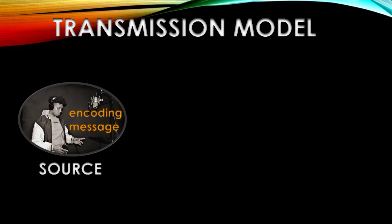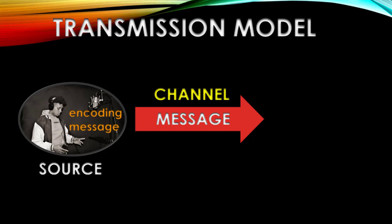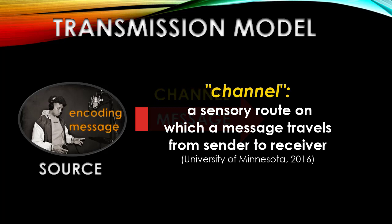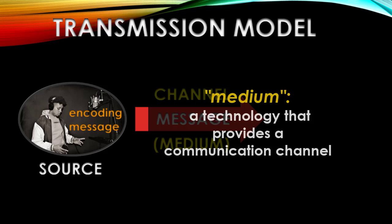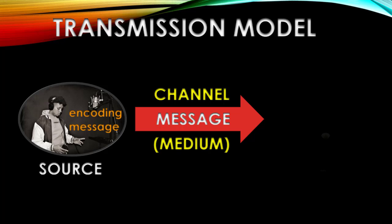That message is going to be carried to whoever is going to receive it over a specific channel. A channel, as you recall, is essentially the sensory route that a message takes as it's going from the source to the receiver. Now, of course, in this case, this musician is probably looking to get that message to a broad audience and not just a single point receiver. And so, the message is going to need to rely on a channel that uses some form of technology to make sure it gets where it needs to go. And when we're talking about channels that use technology, we refer to these as media. So, in this case, the medium being used is digital music technology that will be uploaded and shared and downloaded to a particular receiver.